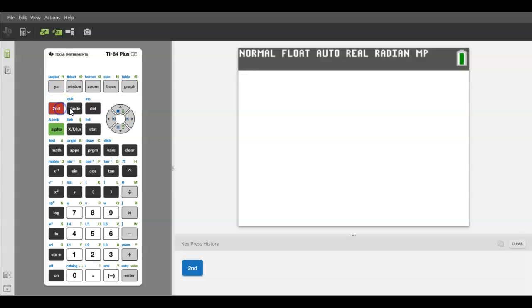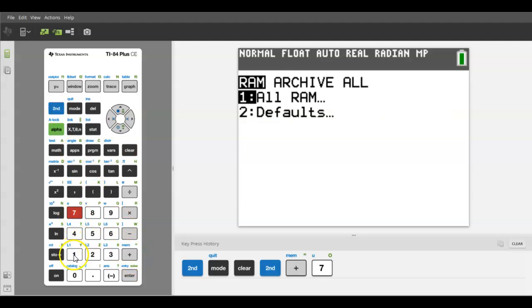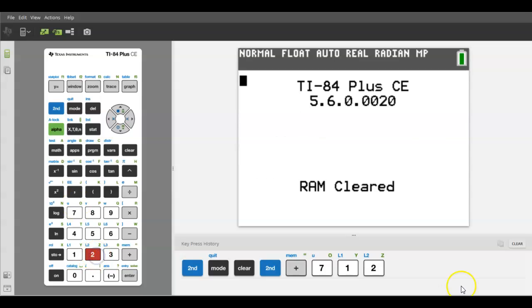To quit, click second and then mode. If things get really messed up in your calculator and it keeps giving you errors, you can always reset your calculator back to factory default. To do that, go to second plus seven one two, and it will clear everything - all your data, all your graphs. You might want to write that down: second plus seven one two to clear out your calculator.